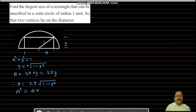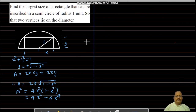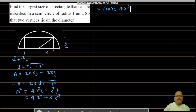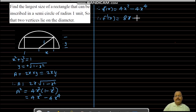This area is maximum when A² is maximum. A² = 4x²(1 − x²) = 4x² − 4x⁴. Let f(x) = 4x² − 4x⁴. Therefore f′(x) = 8x − 16x³, and f″(x) = 8 − 48x².